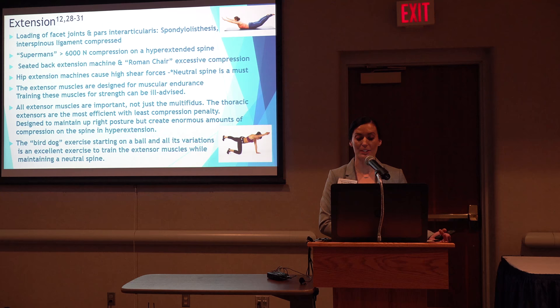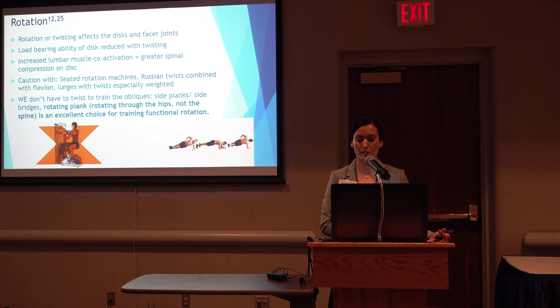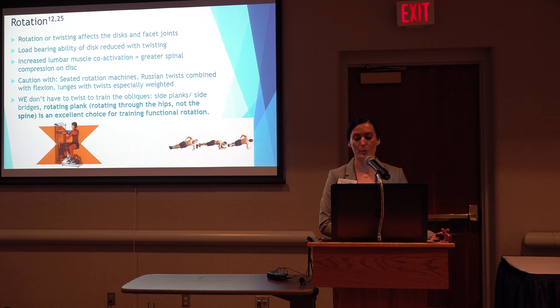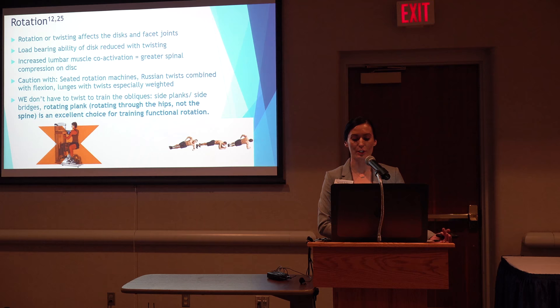Rotation or twisting of the spine can cause compression and affects the load-bearing ability of the discs when placed in a weakened position, resulting in greater spinal compression. All twisting or rotational exercises must be considered with caution. Seated rotation machines can create high compressive forces. The obliques and the quadratus lumborum are supremely trained with side planks, which hold the spine in a neutral position to decrease the likelihood of tissue overload. A rotating plank, which we'll show later, rotates through the hips and not the spine and is an excellent choice for training functional rotation.